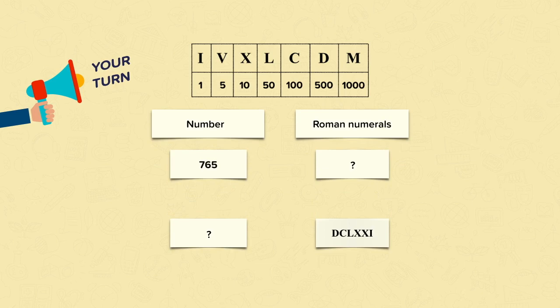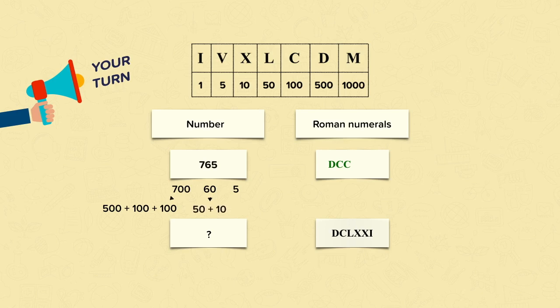So let's start by working out what 765 is in Roman numerals. Again we can partition the number to help us. First, what is 700? To make 700 we do 500 add 100 add another 100 — in Roman numerals that would be D, C, C. Then to make 60 we do 50 add 10. 50 is L and 10 is X, so we've got L, X. And now for the 5 — the 5 is just V. So 765 is D, C, C, L, X, V. Well done if you got that correct.